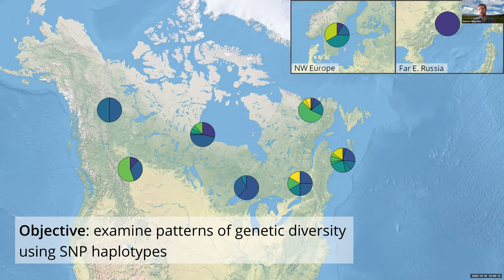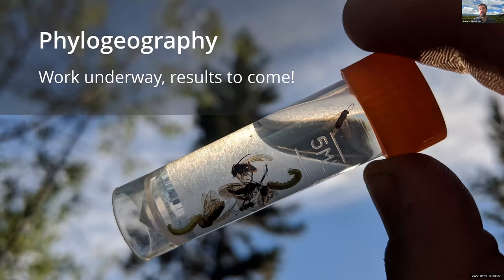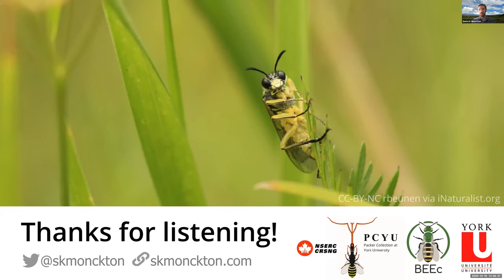I'm also going to be looking at some more traditional population genomics. This is just a dummy visualization to give you a visual cue reminding you of similar maps you've seen. This is all a work in progress — results are yet to come, thanks to COVID-19 — but hopefully the general approach is interesting to some or all of you. Thanks so much for listening.